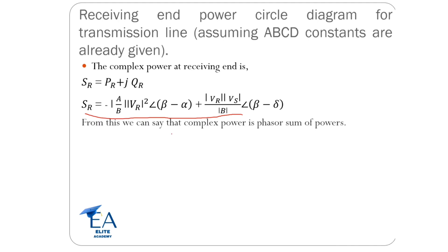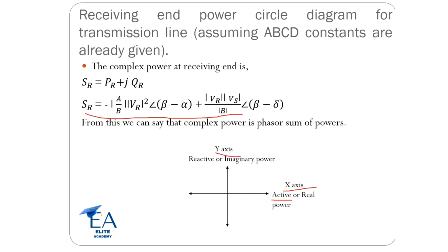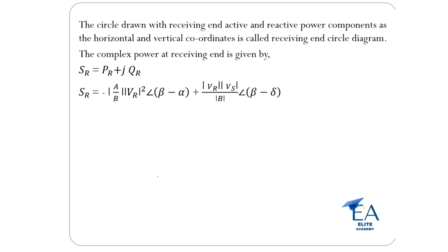So that you can understand the equation. From this, we can say that complex power is a phasor sum of powers, so we want to draw a circle diagram. For that purpose, we need an X axis and Y axis. On the X axis there is active power PR, and on the Y axis there is reactive power. The circle drawn with receiving end active and reactive power components as horizontal (X axis) and vertical coordinate (Y axis) is called the receiving end circle diagram.